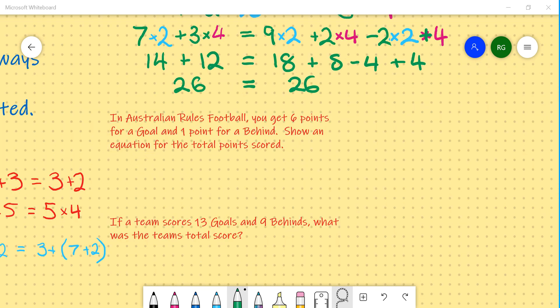We use substitution a lot to solve problems. And here in the red writing, I have a question. It says, in Australian rules football, you get 6 points for a goal and 1 point for a behind. Show an equation for the total points scored.